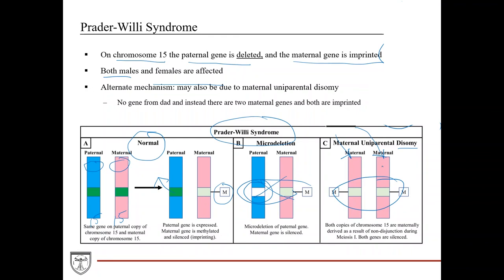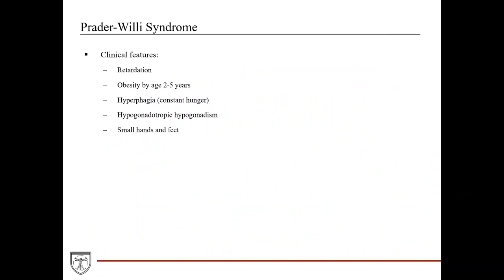These patients also develop Prader-Willi syndrome because both genes are silenced. The clinical features of Prader-Willi syndrome include mental retardation, obesity by ages 2 to 5, hyperphagia — constant hunger — which likely leads to the obesity, hypogonadotropic hypogonadism, and small hands and feet. These are the characteristics you want to pay attention to in question stems when you encounter these on exams.